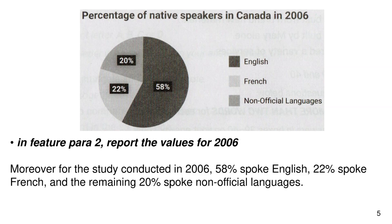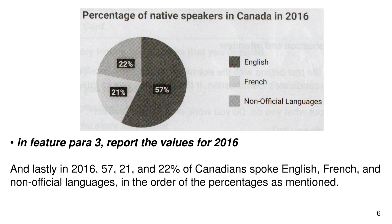In Feature Para 3, report the values for 2016. Lastly, in 2016, 57%, 21%, and 22% of Canadians spoke English, French, and non-official languages in the order of the percentages as mentioned.